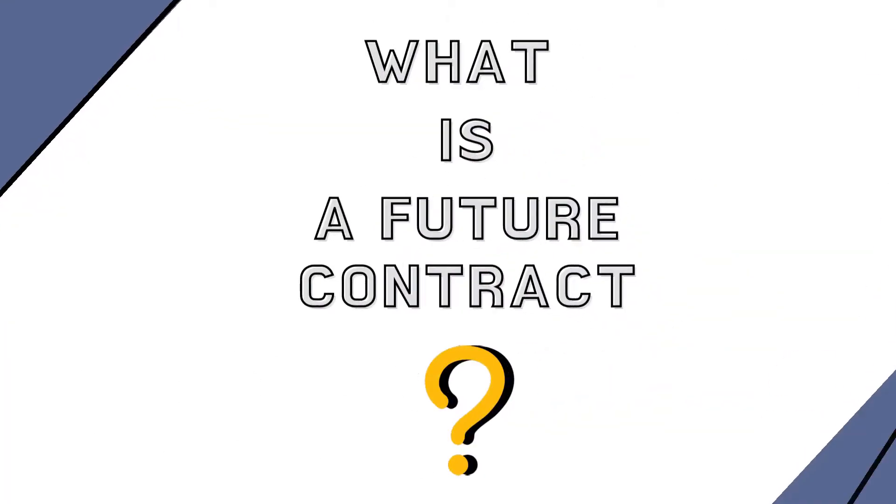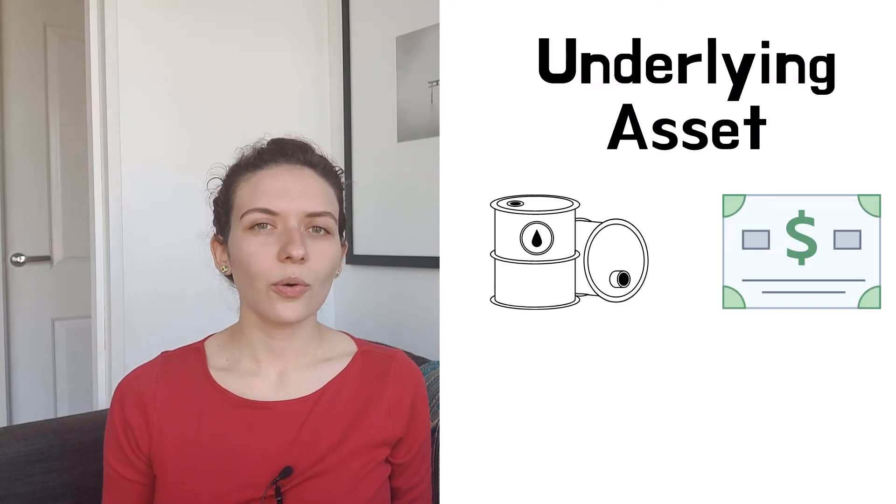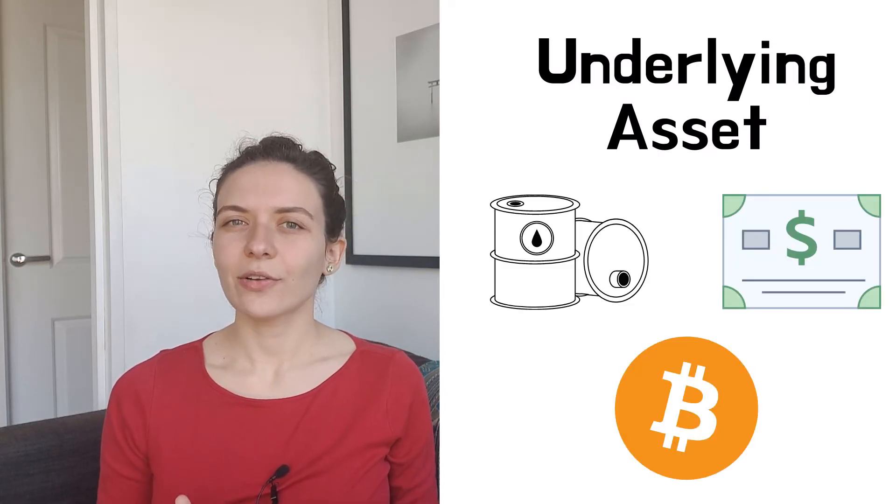So what is a future contract? A future contract is a derivative in which two parties agree to exchange a certain good in the near future, usually in three or six months time. The price at which the exchange will happen is decided today and is called the future price. The good object of the transaction is called the underlying asset, and this can be a commodity, a stock, a bond, and recently even cryptocurrencies.